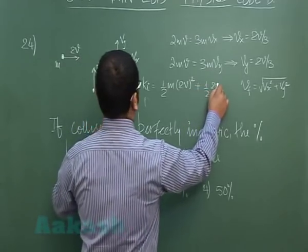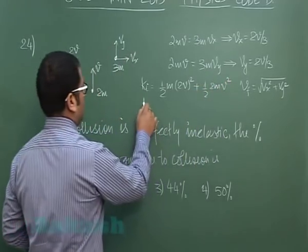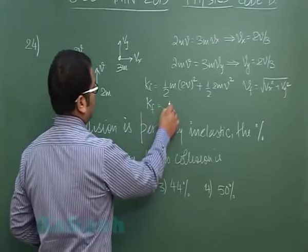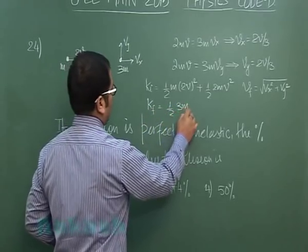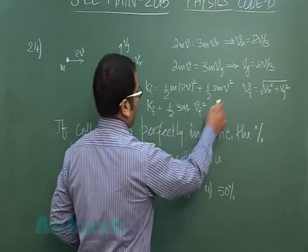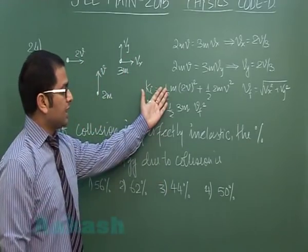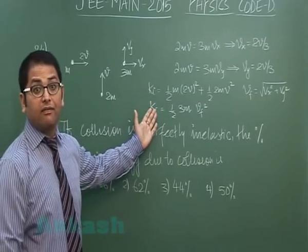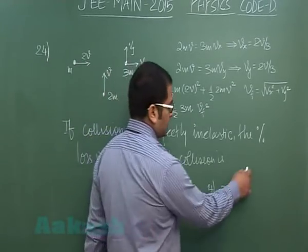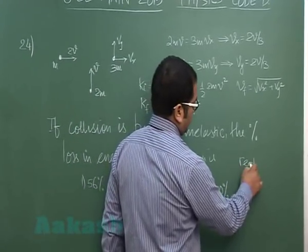And the final kinetic energy would be one-half 3m times vf squared, where vf has been calculated. Now I have initial kinetic energy, I have final kinetic energy. The percentage lost required would of course be K final minus K initial by K initial into 100 percent.